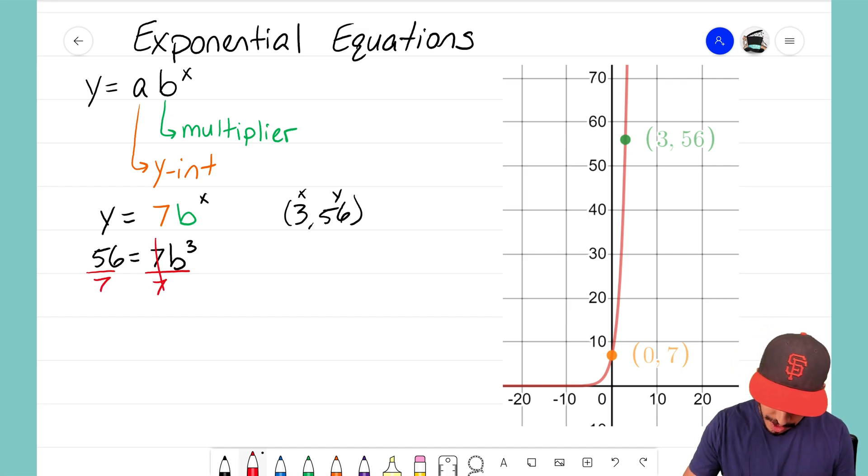Right now we're multiplying it by 7, so if I divide both sides by 7 the sevens on the right will cancel to a one. So on the right side I'm just left with B to the third power equals 56 divided by 7 which is 8.